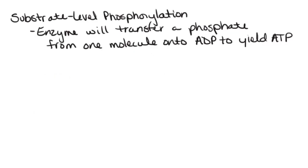The first method of making ATP is going to be what we call substrate level phosphorylation. By definition, this is going to be when we have an enzyme that is going to transfer a phosphate group from one molecule onto ADP, and the end result of that is that we get the ATP molecule.